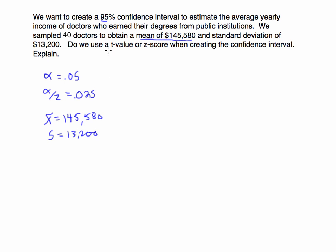How do we know whether to use a t-value or a z-score? There are some videos and textbooks that differ on how to determine this. What we're going to do is determine whether or not the population standard deviation is known. In this example, we know the standard deviation is 13,200, but that's from the sample — not the population. So it is not given. Therefore, we are going to use the student t-distribution.